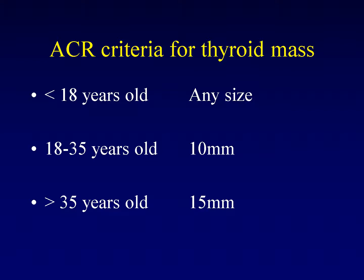The ACR criteria for incidental thyroid masses found on CT or MRI are as follows. If the patient is under 18 years old, any size lesion merits biopsy, as thyroid masses should not be present in children. Between ages 18 and 35, the threshold for biopsy is 10 millimeters. Over age 35, some adenomas are expected, so the threshold rises to 15 millimeters. Malignant features always override these size thresholds and send the patient directly to biopsy.